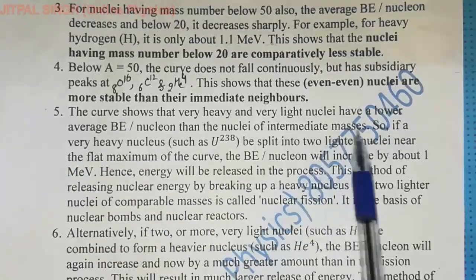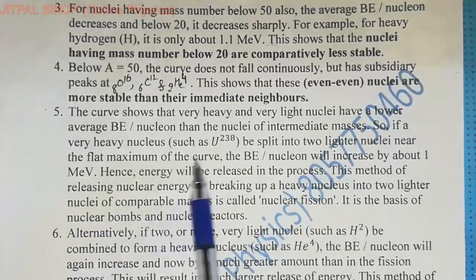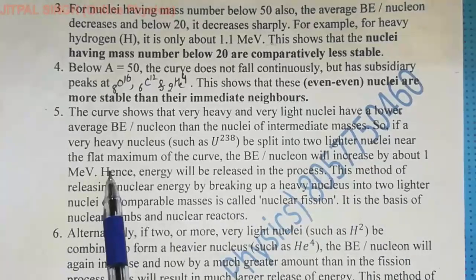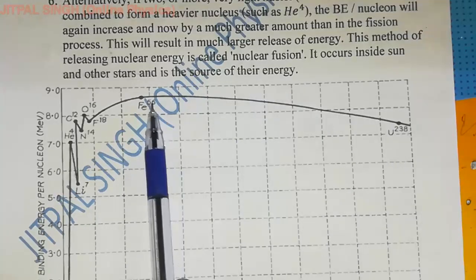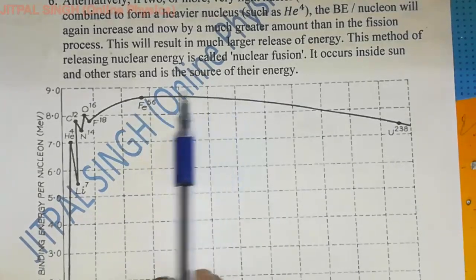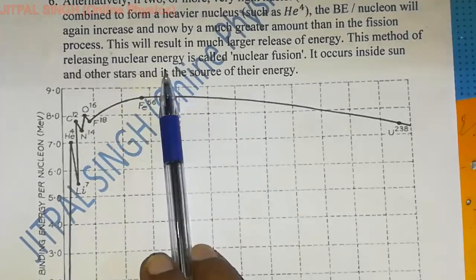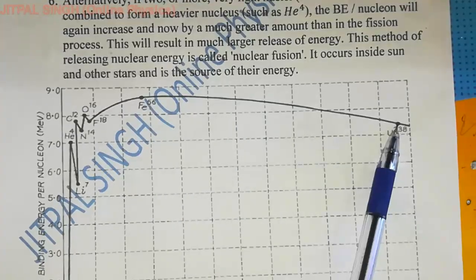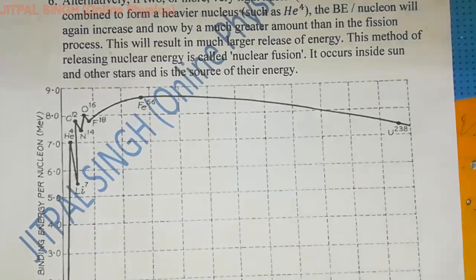The curve shows that very heavy and very light nuclei have a lower average binding energy per nucleon than nuclei of intermediate masses. If a very heavy nucleus such as uranium-238 is split into two lighter nuclei near the flat maximum of the curve, those two fragments lie in the region where binding energy per nucleon is higher. The average value there is about 8.5 MeV compared to 7.6 MeV for uranium — a difference of about 0.9 MeV, approximately 1 MeV.